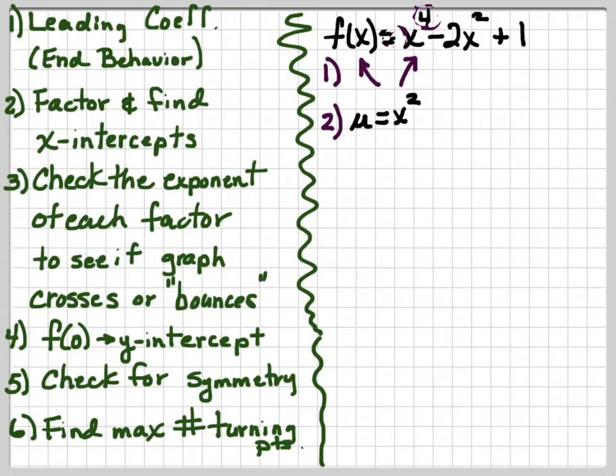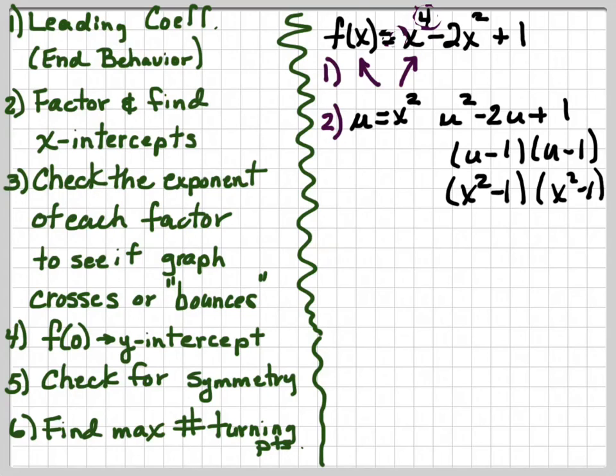Okay. So the second thing we're going to do here is we're going to do a little substitution in order to be able to factor this. So we're going to let u equals x squared. And if we do that, then we have u squared minus 2u plus 1, which factors to u minus 1 times u minus 1. But it's not u we're looking for. It's x. So we're going to substitute our x squared back for u. And we have x squared minus 1 times x squared minus 1. You spread this out, x minus 1, x plus 1, x minus 1, x plus 1.